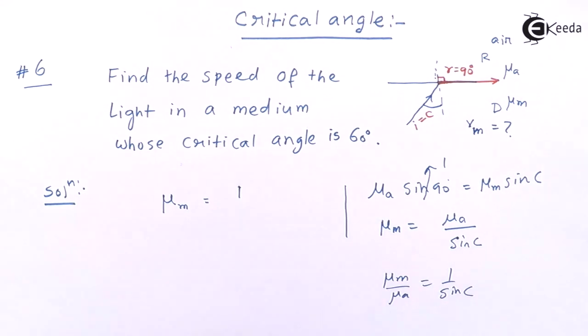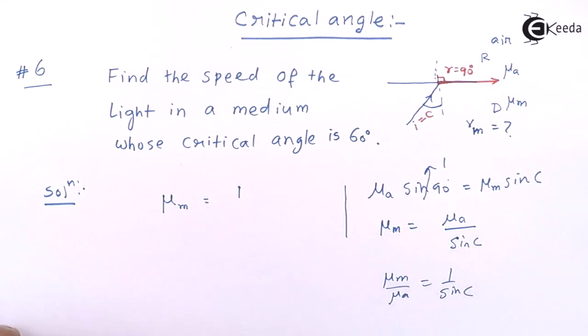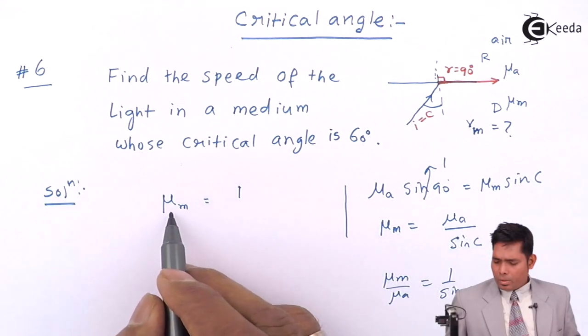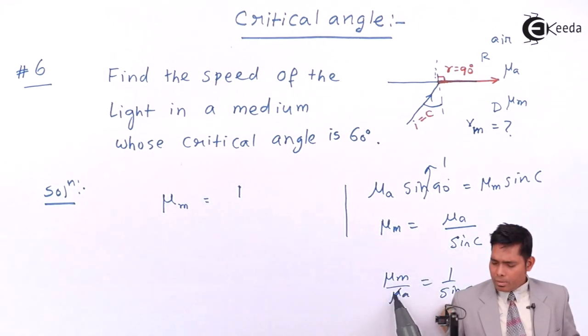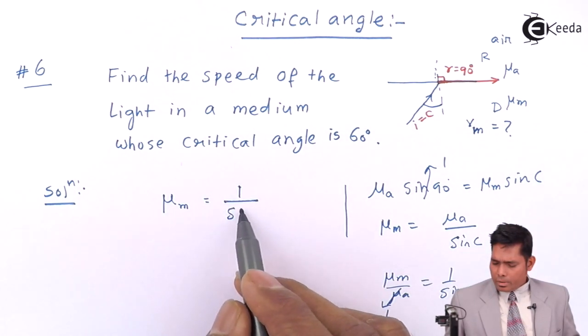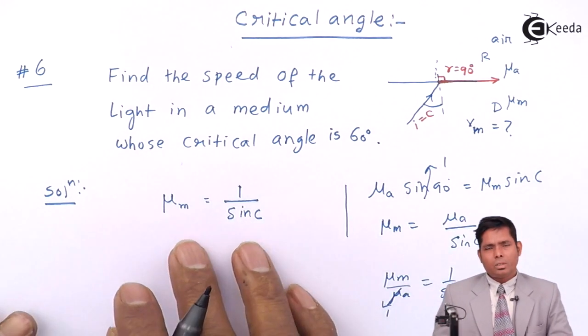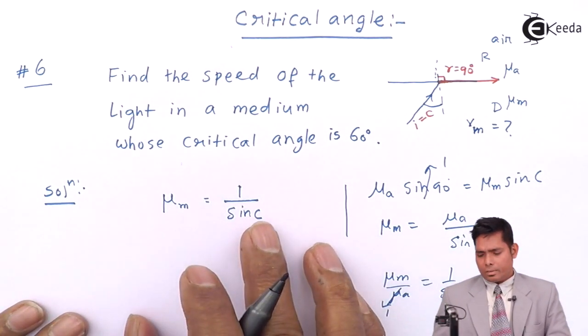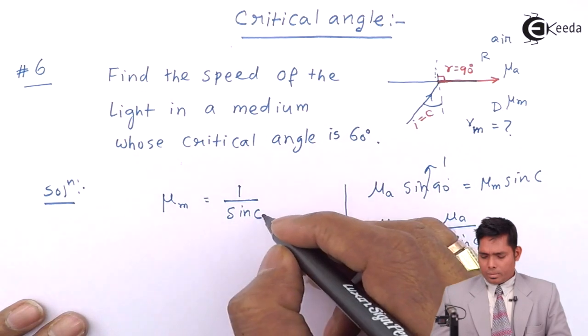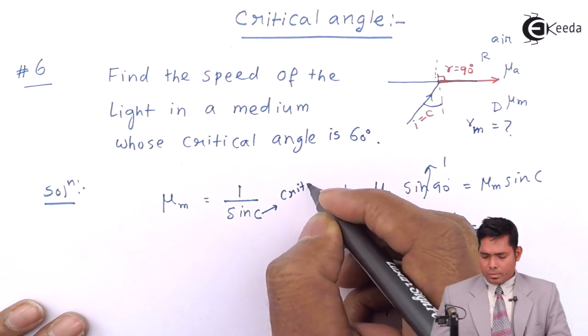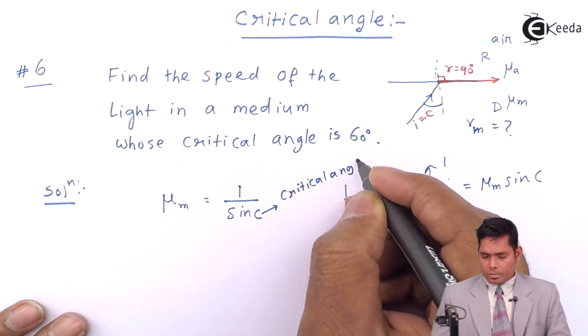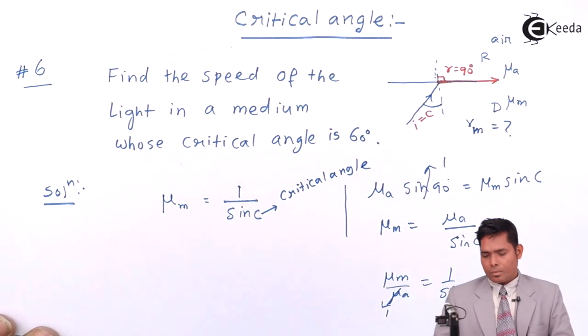So mu m comes out to be mu a divided by sine C, or mu m by mu a is 1 by sine C. Mu m by mu a is nothing but mu m. With respect to air this is mu m. Therefore, this is 1 by sine C. This is the formula for critical angle. C stands for critical angle.